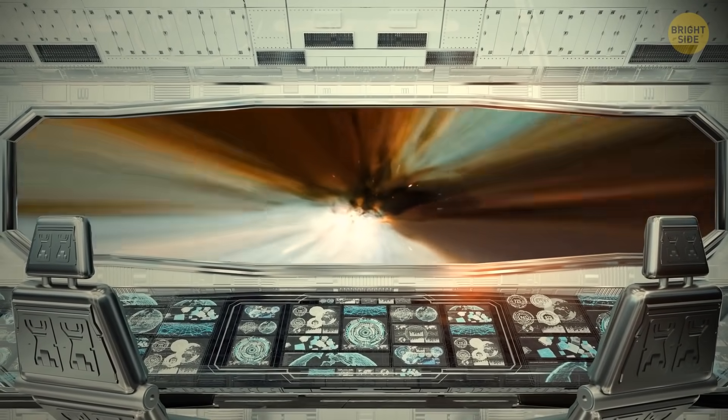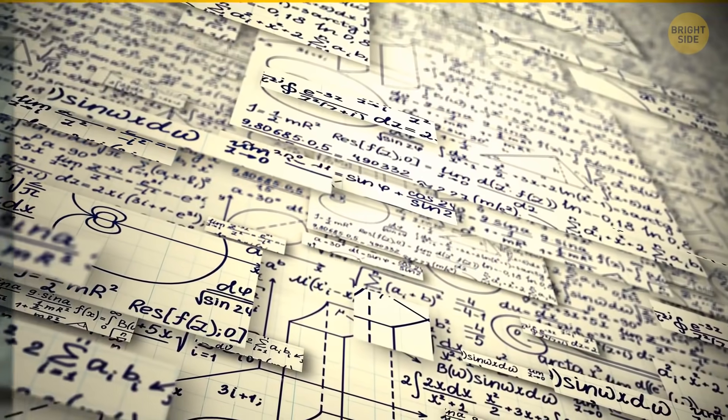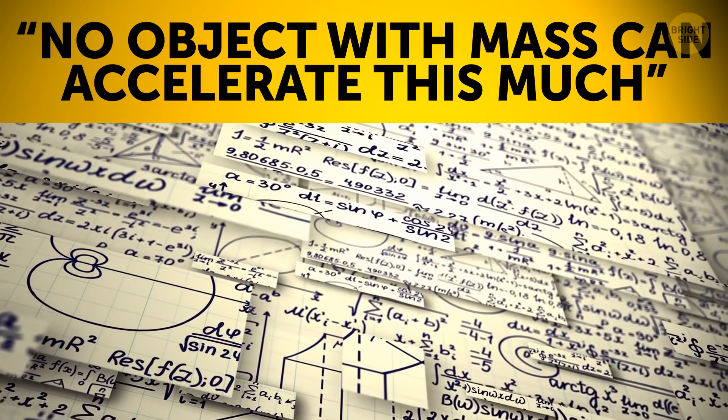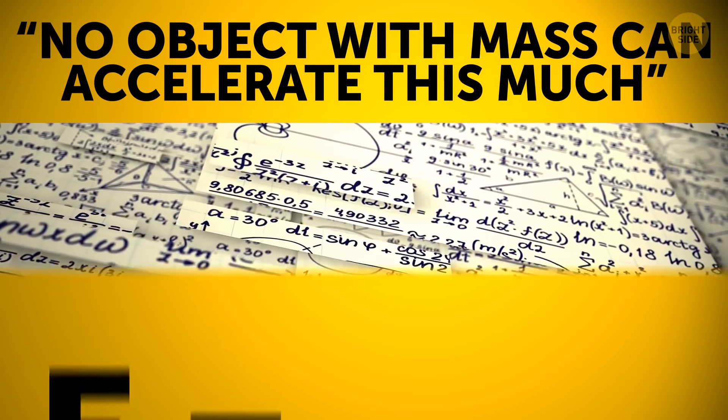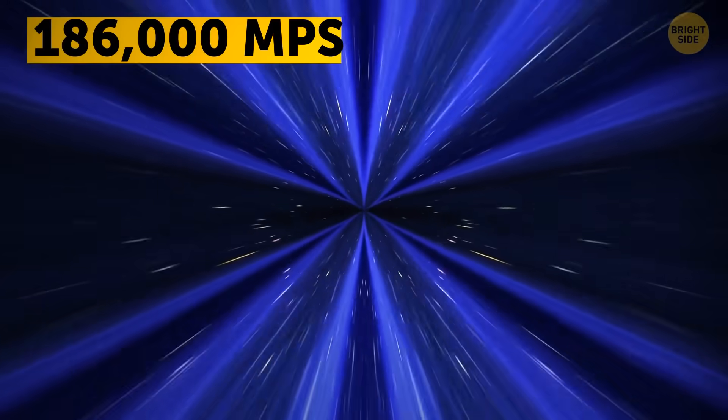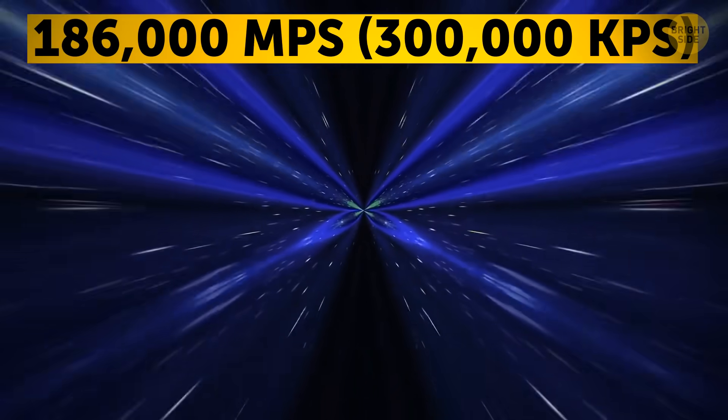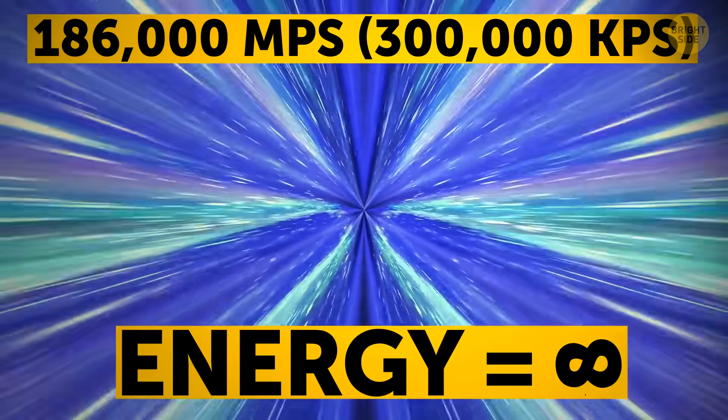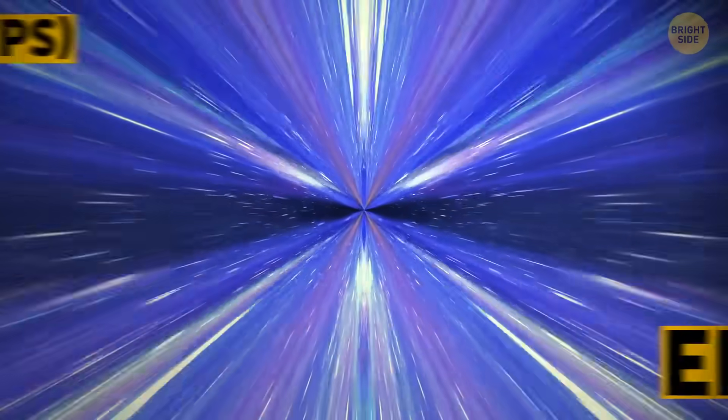Well, until recently, travel at this speed was considered impossible. Fundamental laws of physics say that no object that has a mass can accelerate this much. Energy is required to accelerate mass. And to reach the speed of light, which is about 186,000 miles per second, we need an infinite amount of energy.